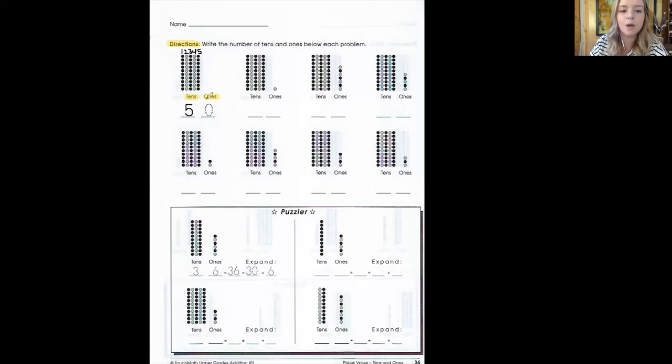Now let's look at the ones column. There's nothing in the ones column. That means that we have zero. We have zero ones, so I'm going to write that underneath. We got 50. We counted five tens and zero ones. That makes 50.